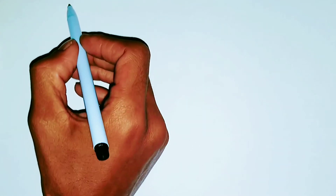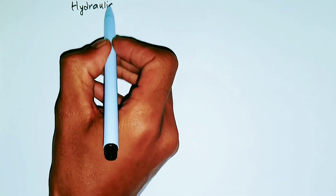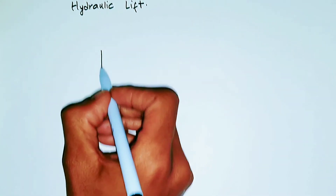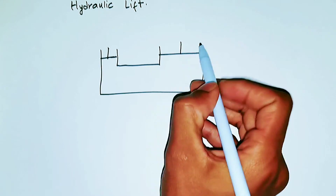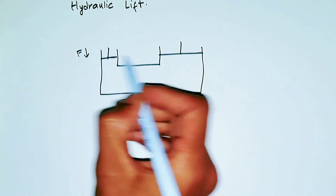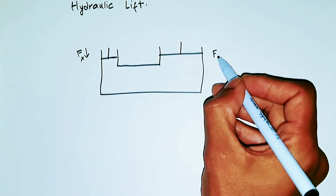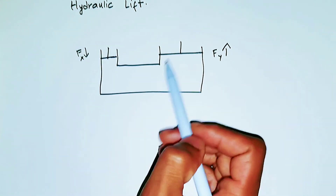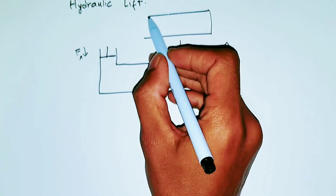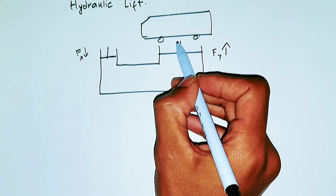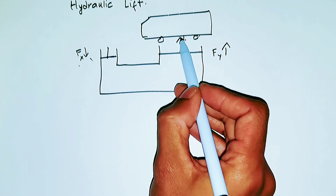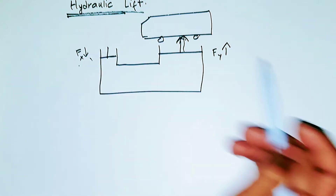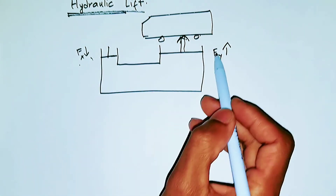Let's look at some applications. First is the hydraulic lift. It has the same basic structure — a huge piston and a small piston. If you apply even a small force at piston X, the force at piston Y will be multiplied. If you put a car on that piston, even with less input force, the piston will lift the car up. That's an application of Pascal's Law.